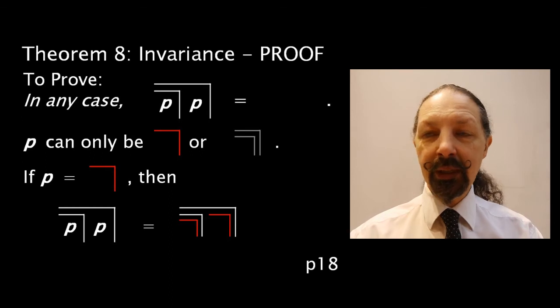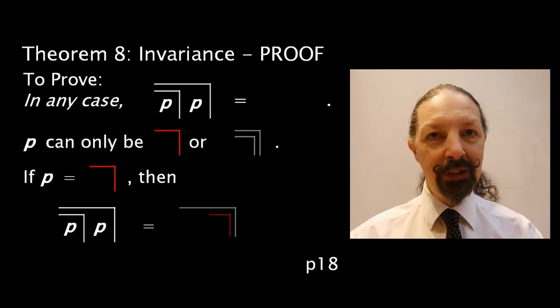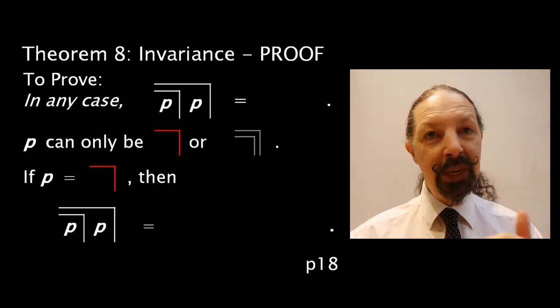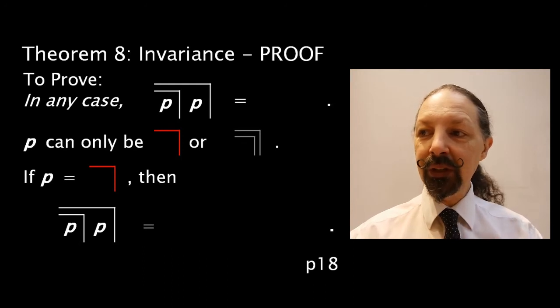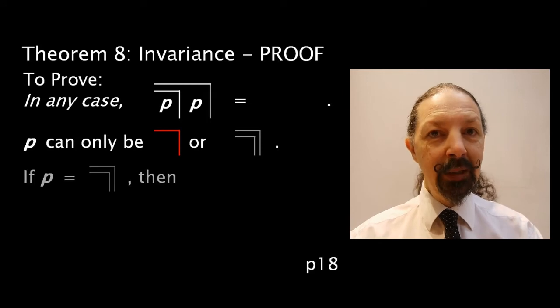That's what the expression will look like with p as a mark. You can see that the nested mark can be cancelled, leaving another pair of nested marks. And that can be cancelled as well. So, if p is a marked state, then that expression renders to an unmarked state.